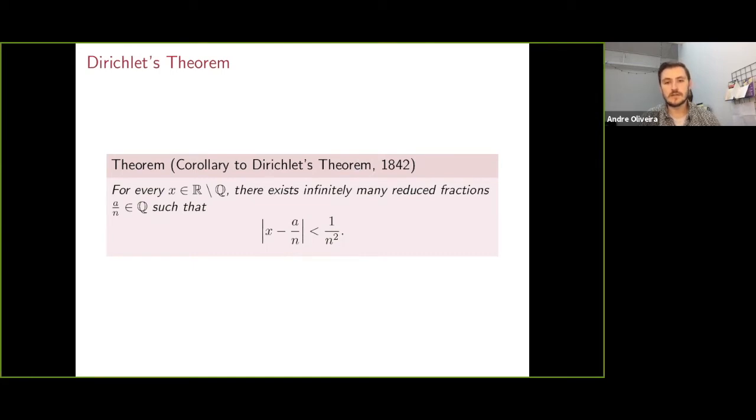And so one way to generalize this is to say, instead of being within 1 over n squared, what if we want to be within 1 over 2n squared or 1 over 3n squared? Or what about a more general function that maybe doesn't behave as nicely?